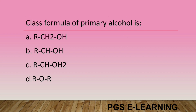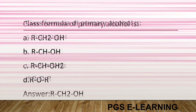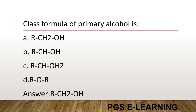The general formula of primary alcohol is: Option A, R-CH2-OH. Option B, R-CH-OH. Option C, R-CH-OH. Option D, R-O-OH. Correct answer is R-CH2-OH.